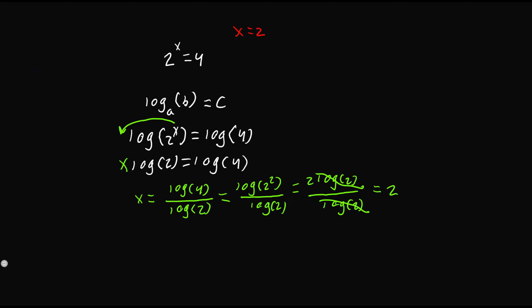We can cancel log of 2 in numerator and denominator due to the multiplication property. But be careful: if it were 2 plus log of 2 divided by log of 2, we would not be able to cancel because it is bound by the addition property. So we have to be sure not to confuse 2 plus log of 2 and 2 times log of 2 — in a fraction like that we cannot simplify it to 2.